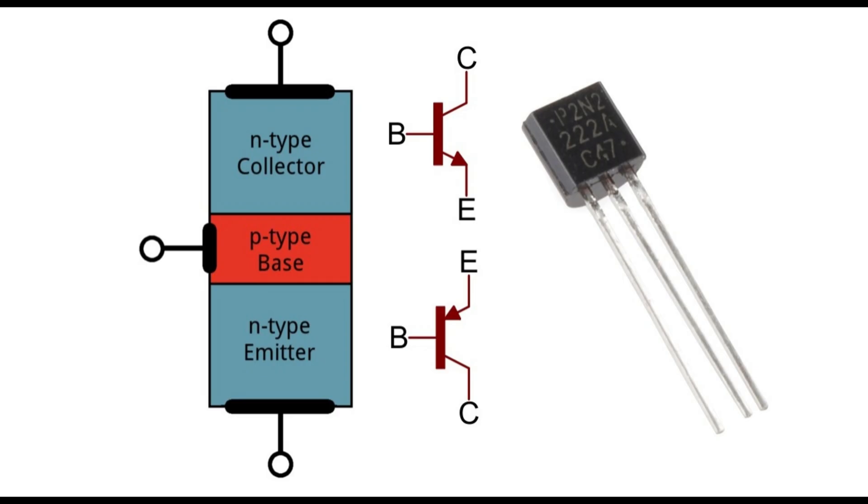BJTs exist as PNP and NPN types based on the doping types of the three main terminal regions. An NPN transistor comprises two semiconductor junctions that share a thin P-doped region, and a PNP transistor comprises two semiconductor junctions that share a thin N-doped region.